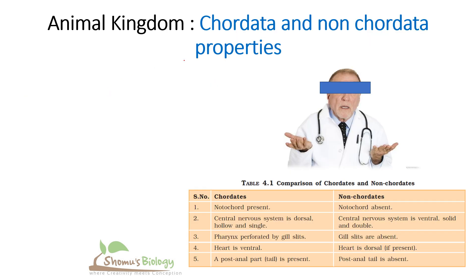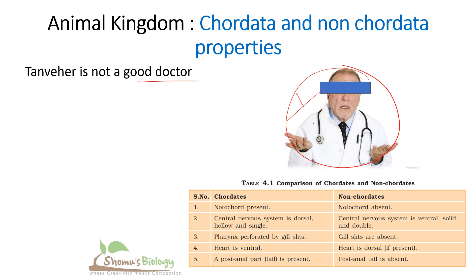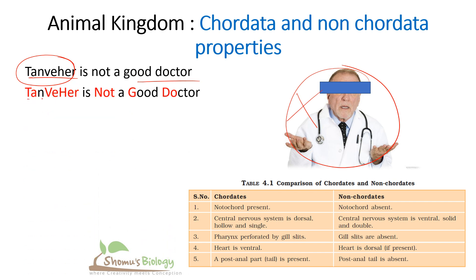Now let's look at the chordata and non-chordata properties and the difference between the two. You need to remember one sentence: 'Tanvir is not a good doctor.' Tanvir is an Indian name — if you are not Indian, just know it is an Indian name. So remember, Tanvir is not a good doctor, and start with that for chordata properties.